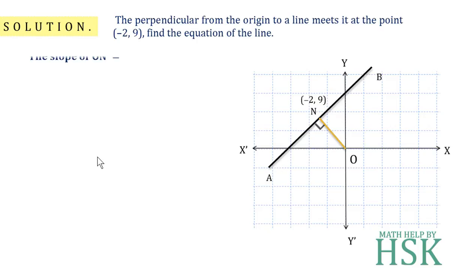to calculate the equation of the line AB, first of all I'm going to calculate the slope of ON. Applying y2 minus y1 upon x2 minus x1, I get this as equal to 9 minus 0 upon -2 minus 0, or -9 upon 2. So slope of this line ON, that is perpendicular from origin to that required line, is -9 by 2. Now we know the condition of perpendicularity: if